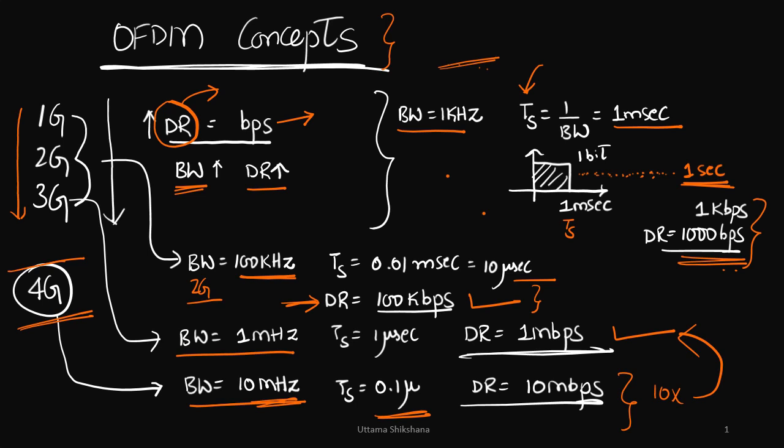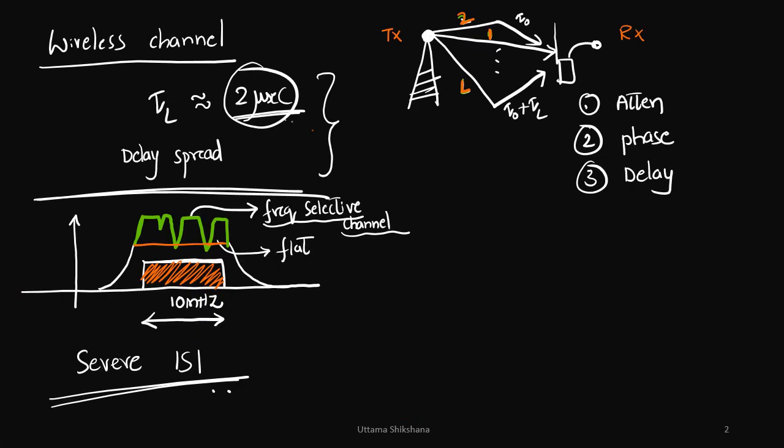So let us see what it is. Whatever we wanted to transmit, we wanted to transmit in the wireless channel. In wireless channel, when a bandwidth of 10 megahertz is considered, the expectation was the channel response frequency response to be flat like this.